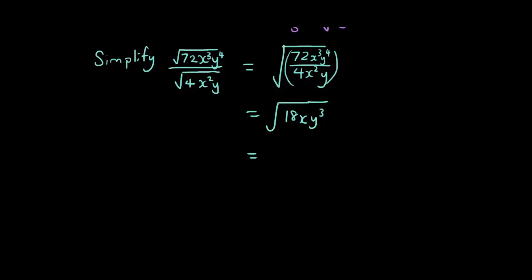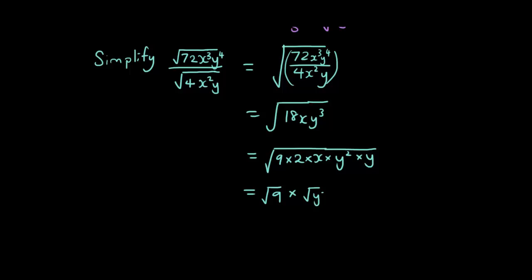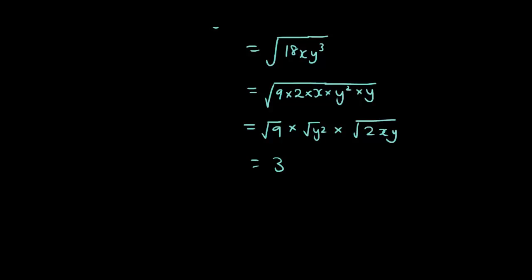Is there a number that goes into 18 that's a perfect square? Yes — it's 9 times 2. So I'm going to separate it out, and I have x and I have y² times y. I can take out the square root of 9 and the square root of y², keeping everything else — 2xy — inside the square root sign. The square root of 9 is 3, the square root of y² is y, and the rest stays inside the square root sign. So the answer is 3y times the square root of 2xy.